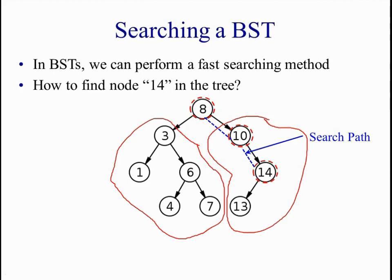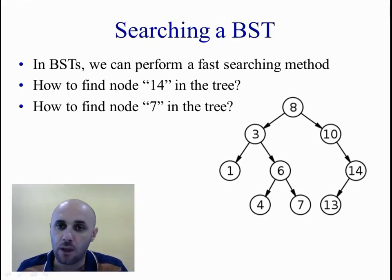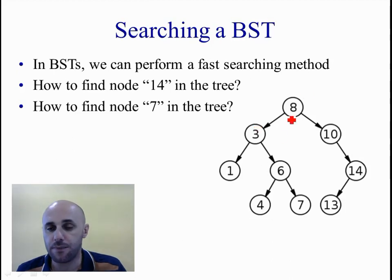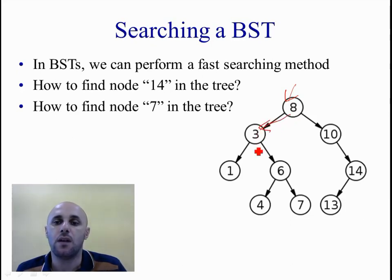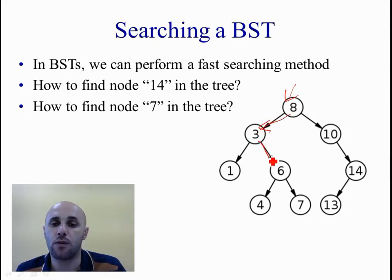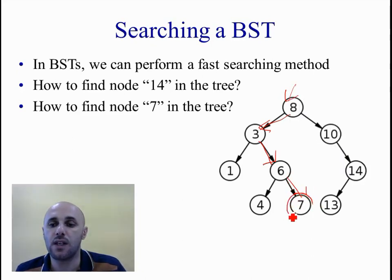Now let's see how we can do the same for node number 7. We start again from the root. Is it equal to 7? No. Is it bigger or smaller than 8? It's smaller than 8 so we go left. Is this 7? No. Do I go left or right? 7 is more than 3 so I go right. Is it equal to 6? No. Go left or right? I will go right. Now is it equal to 7? Yes! I have found the target value and the search path that I followed is shown here.